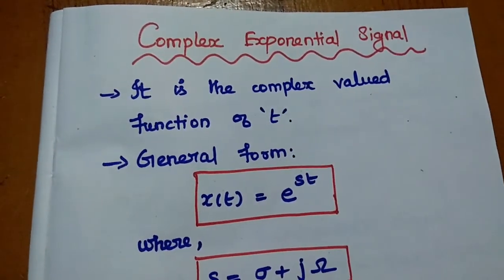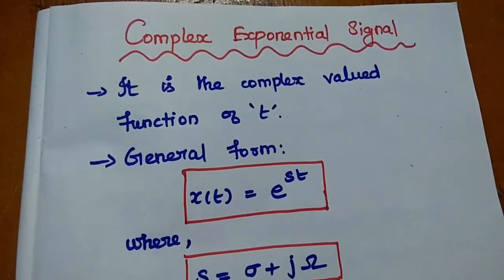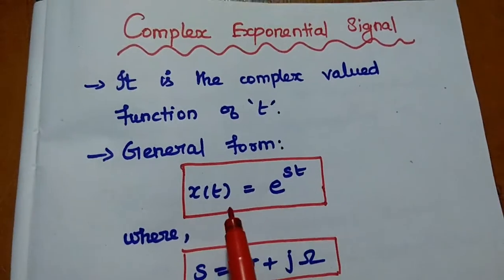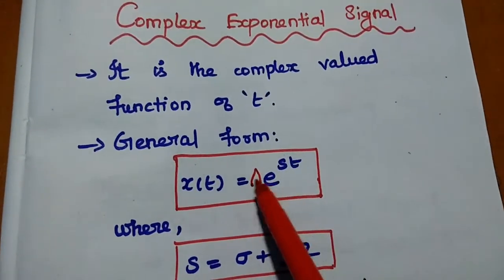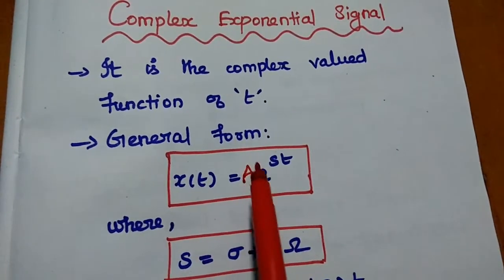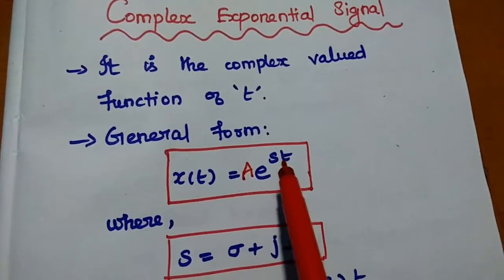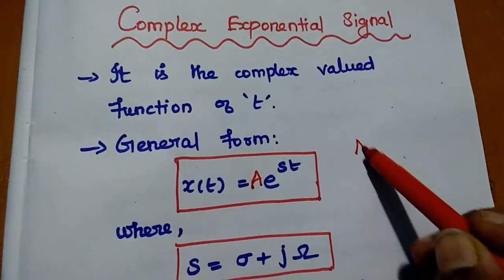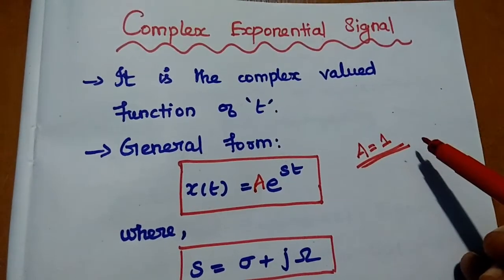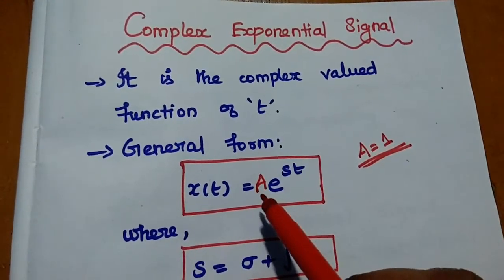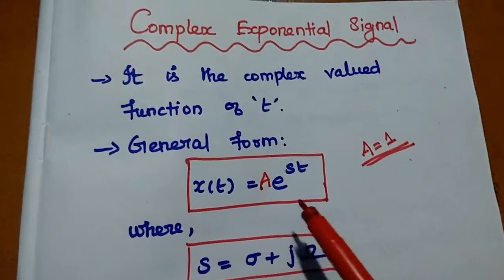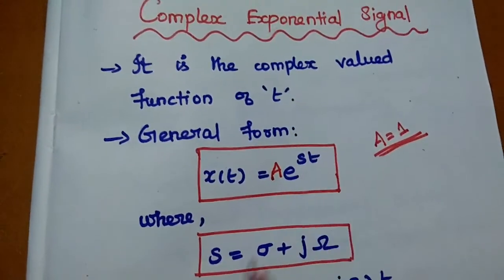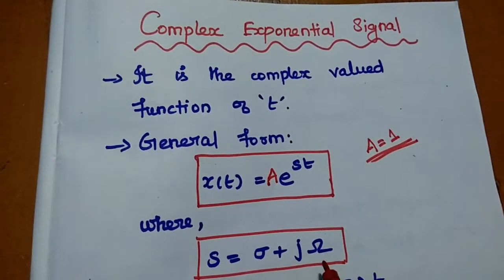In real-time applications, we mostly use the concept of complex exponential signal. It is a complex-valued function of t. The general form of the complex exponential signal is x(t) = A·e^(st), where the parameter s = sigma + jω. Complex-valued means it has both real and imaginary parts: sigma is the real part and omega is the imaginary part.